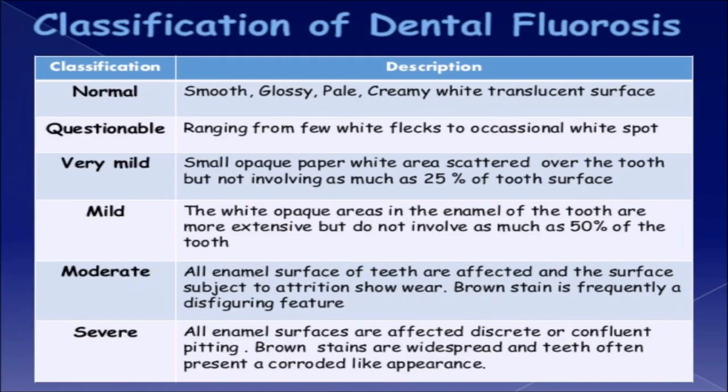Mild — white opaque areas in the enamel are more extensive but do not involve as much as 50% of the tooth. Moderate — all enamel surfaces of teeth are affected and surfaces subject to attrition show wear; brown stain is frequently a disfiguring feature. Severe — all enamel surfaces are affected with discrete or confluent pitting; brown stains are widespread and teeth often present a corroded-like appearance.